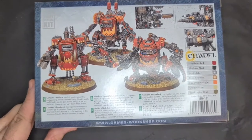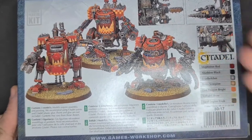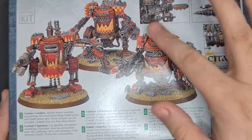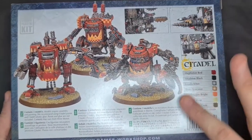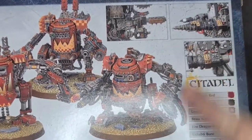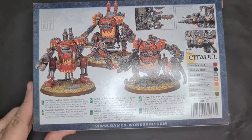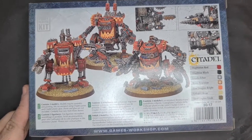We'll flip it over and have a look at the back. Multi-part plastic kit. At the front we had the Goff color scheme, now we've got some Evil Sunz looking scheme here. You get a few different angles on the weapons, so they've zoomed in on some of the weapons here in these little paint-free models.